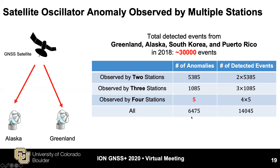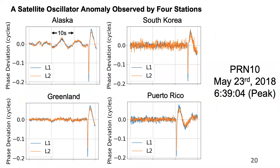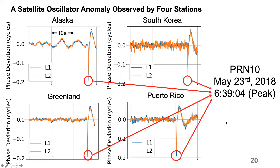In total, more than 6,000 anomalies are observed by at least 2 stations, showing the effectiveness of random forest on satellite oscillator anomaly detection. This slide shows one example from PRN10 observed by 4 stations on May 23, 2018. These 4 events are detected independently and found to correspond to the same satellite oscillator anomaly by post-processing. At that time, satellite PRN10 is located above the Pacific Ocean, close to the US coast. Although different noise is present, all measurements show the same shape of anomaly, and all peaks are observed at the same time — 6:39 AM UTC — confirming this is a genuine satellite oscillator anomaly.